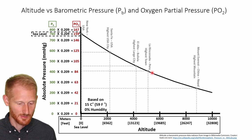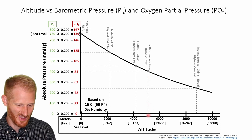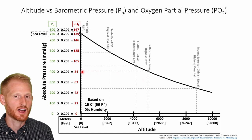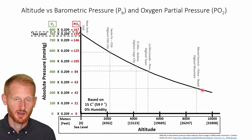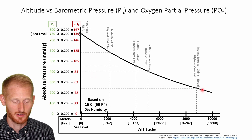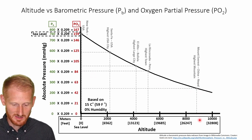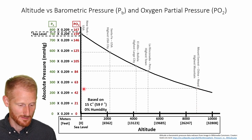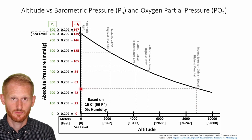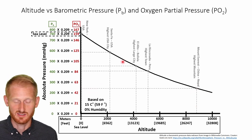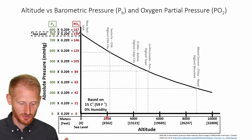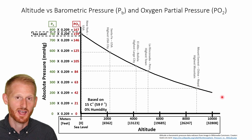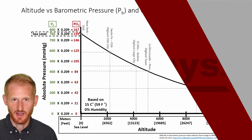The largest permanent settlement at a little over 5,000 meters gives a partial pressure of oxygen of around 85 mmHg. At Mount Everest, the tallest mountain on Earth at around 9,000 meters on this graph, the partial pressure of oxygen is perhaps around 50 mmHg — dramatically less than all the others. As altitude increases, barometric pressure and partial pressure of oxygen go down in a roughly linear fashion.